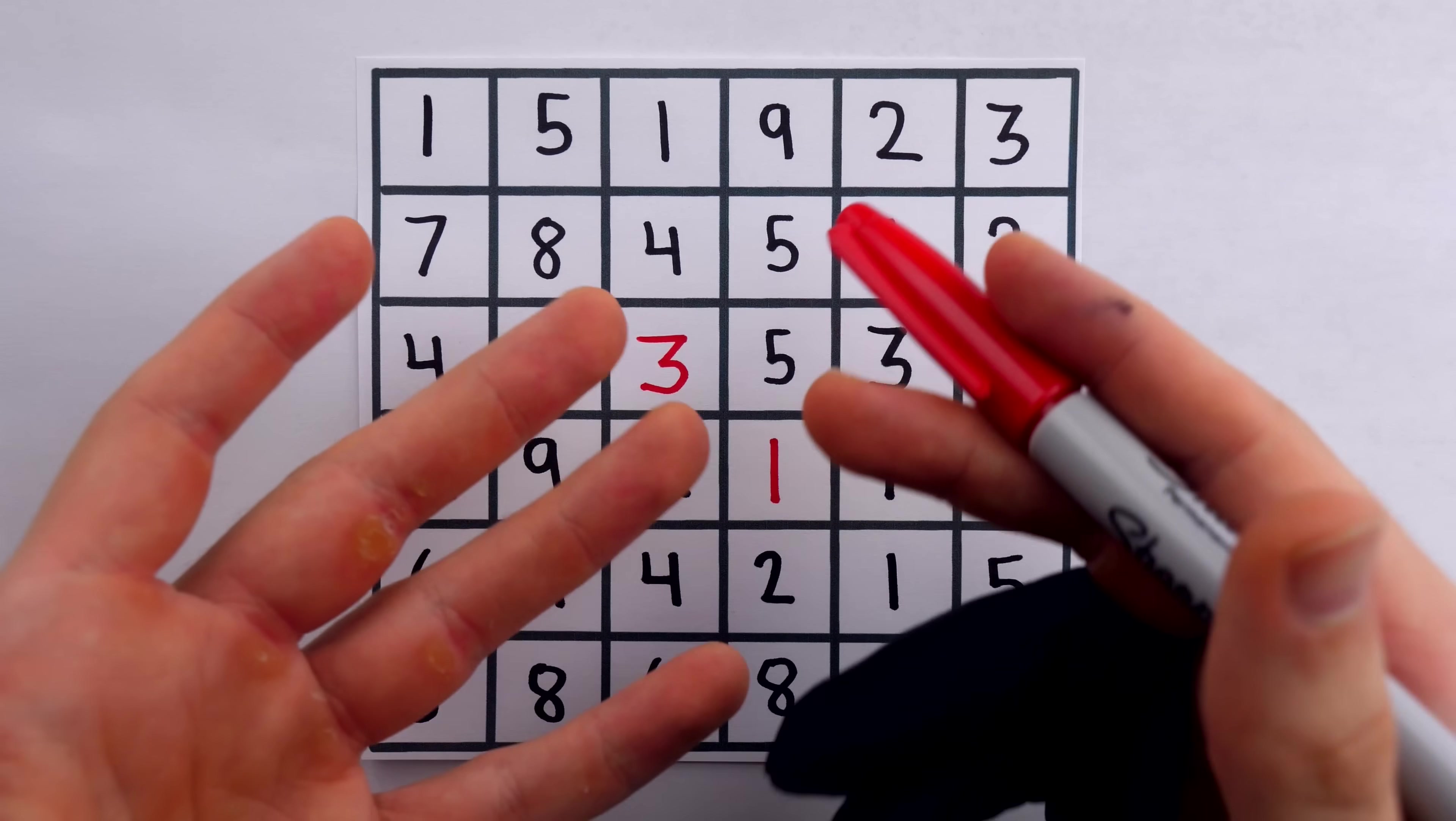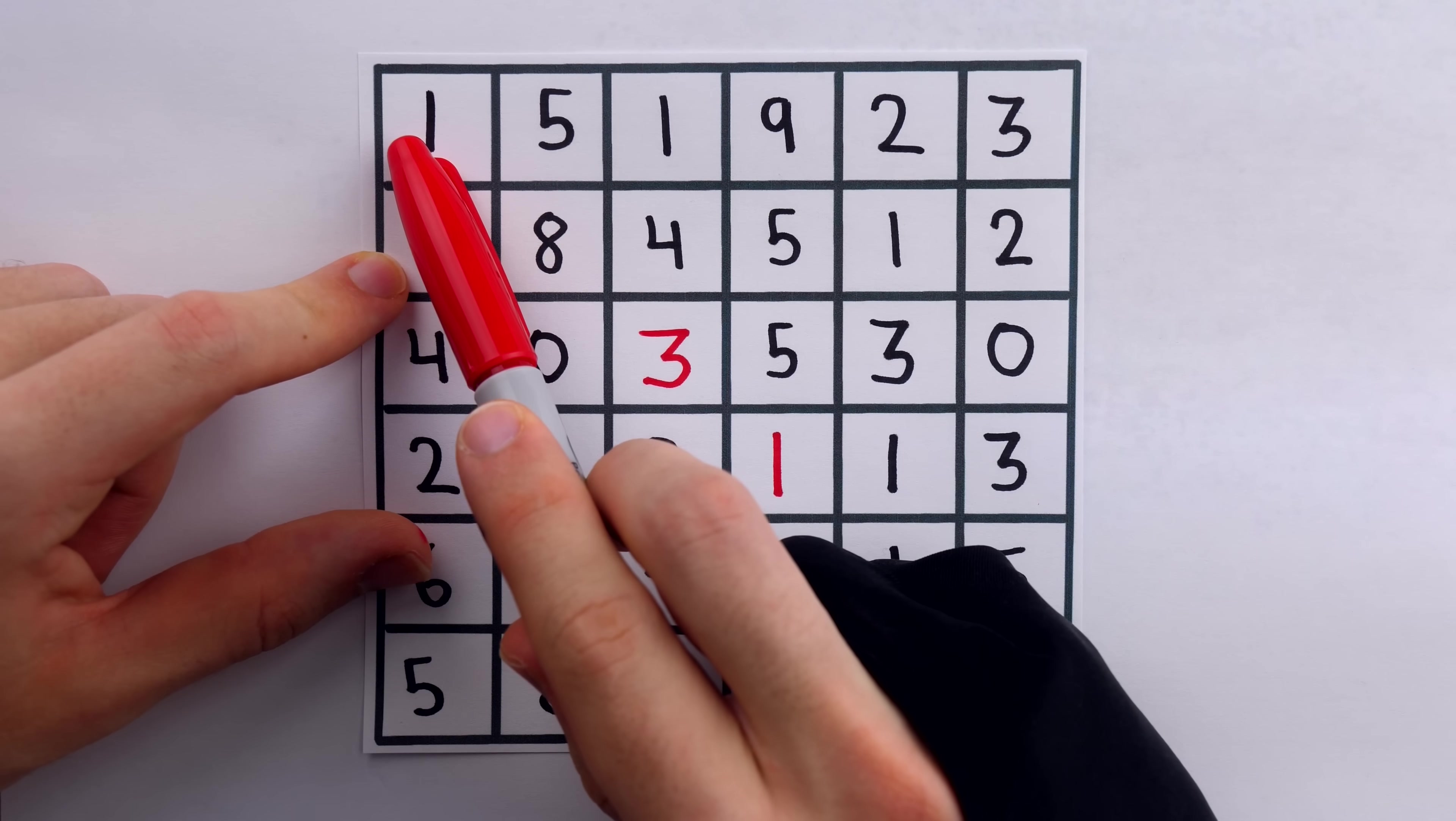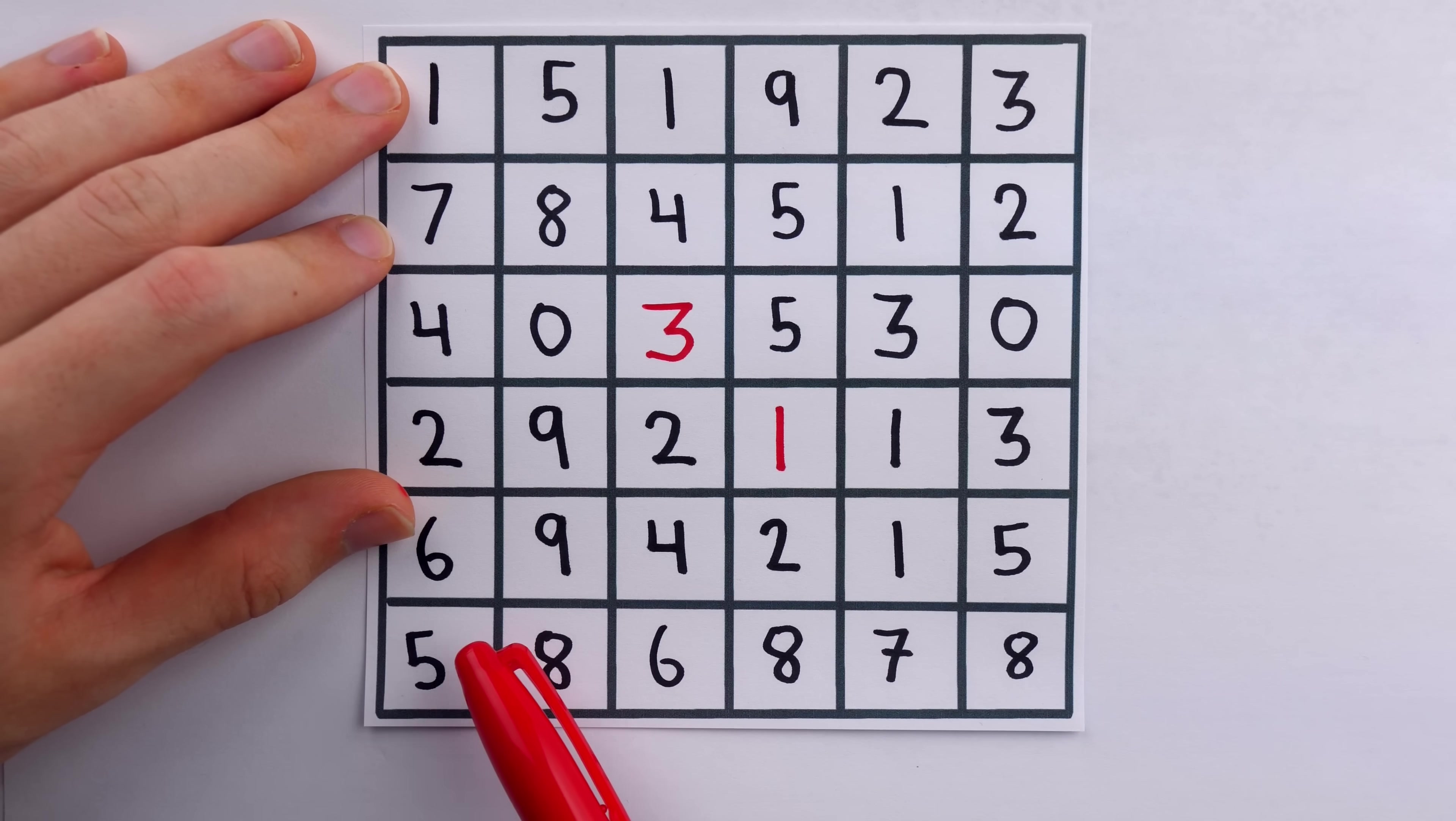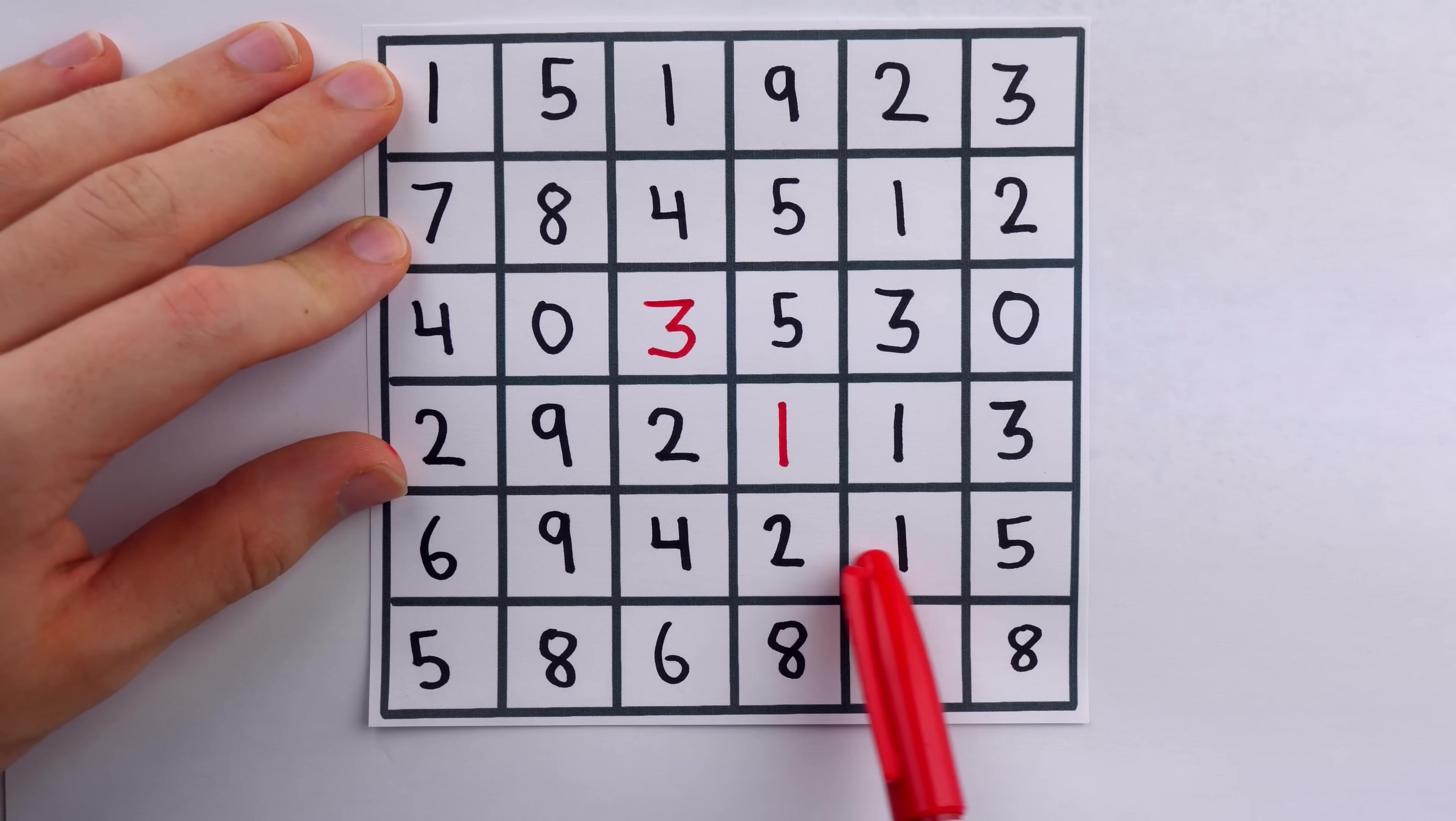So you might start to look at chunks bigger than one. You might look at two numbers at a time. Two. Two. If we look at these as two-digit numbers, you may notice, huh, this goes 15-19, that's up four. 19-23, that's up four. If you look down here, you would see a jump of 10, 58 to 68, and another jump of 10, 68 to 78. You'll see a similar thing in this row and this one.